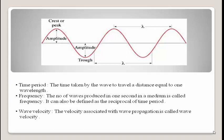The next term is wave velocity. The velocity associated with wave propagation is called wave velocity. When a wave travels from one point to another, it moves with a certain velocity — that velocity is called wave velocity. Wave velocity is measured in meters per second.